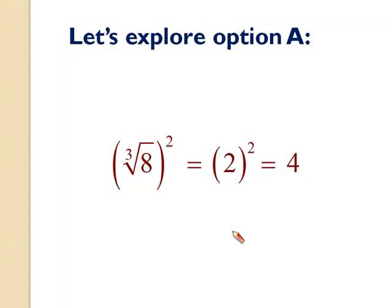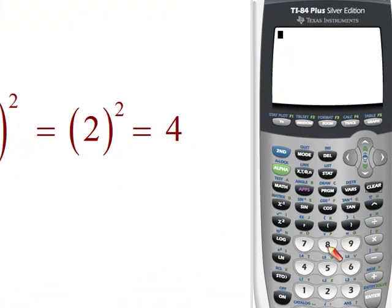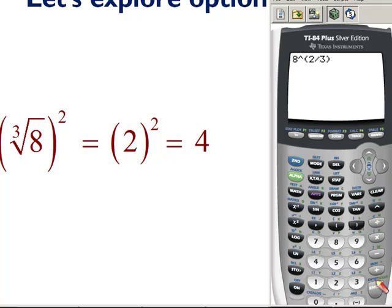We can verify this result using our calculator. So first, let's enter the original problem. We had 8 raised to the 2 divided by 3. Press enter. My calculator gives me 4. Now, to enter this in radical form, well, we're going to have parentheses, because this first piece is going to go in parentheses.